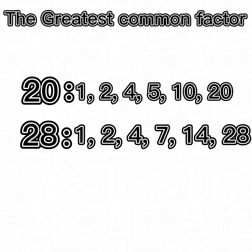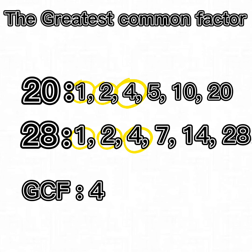The factors of 28 are 1, 2, 4, 7, 14, and 28. The common factors in this set are 1, 2, and 4. The greatest common factor is 4.